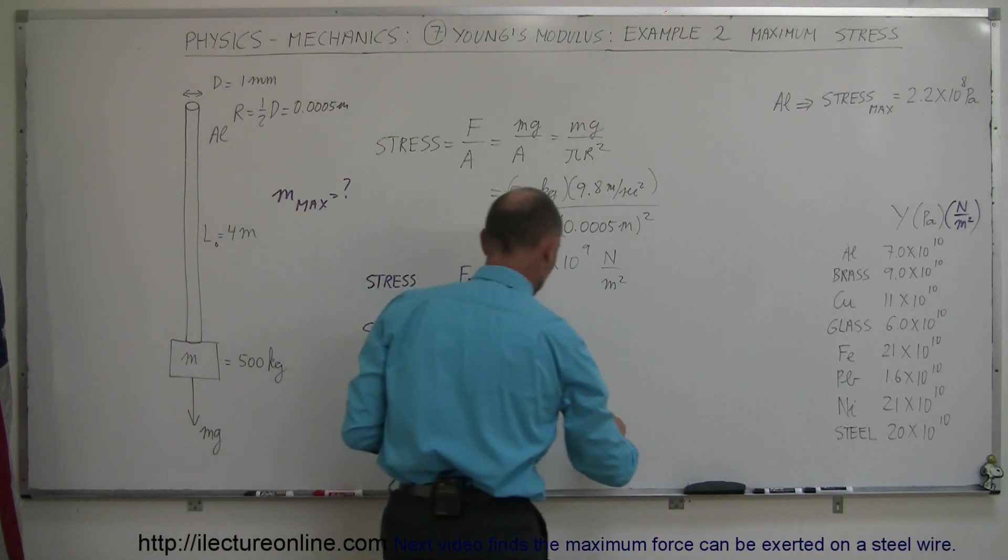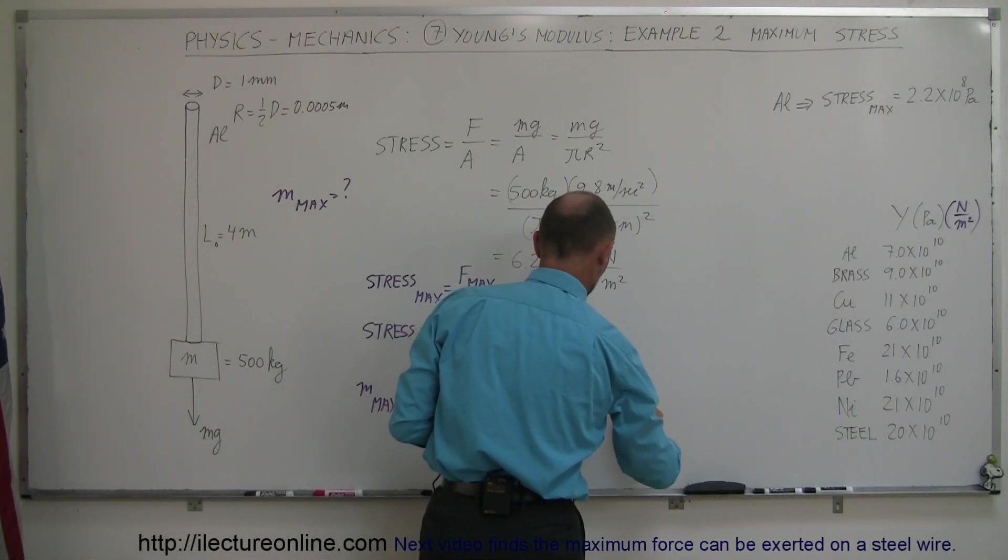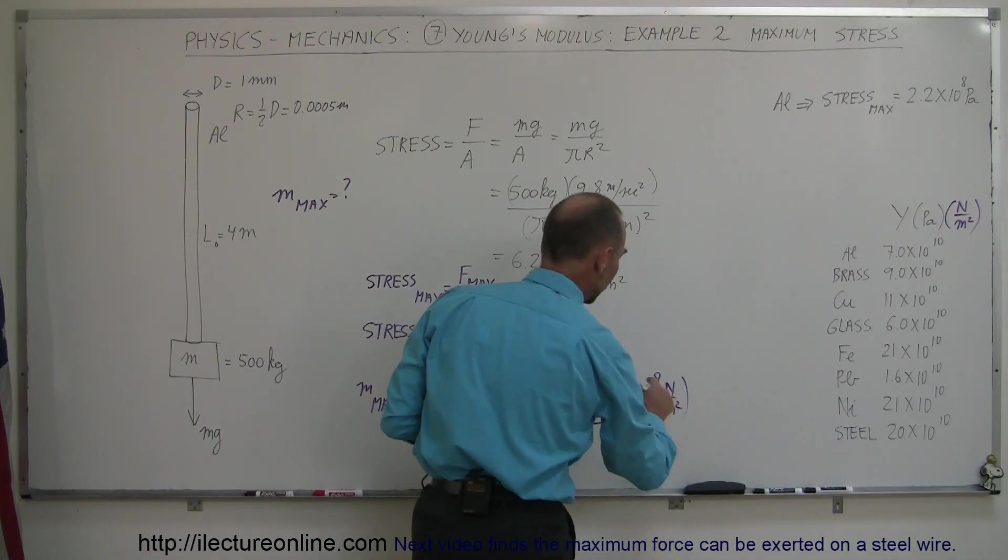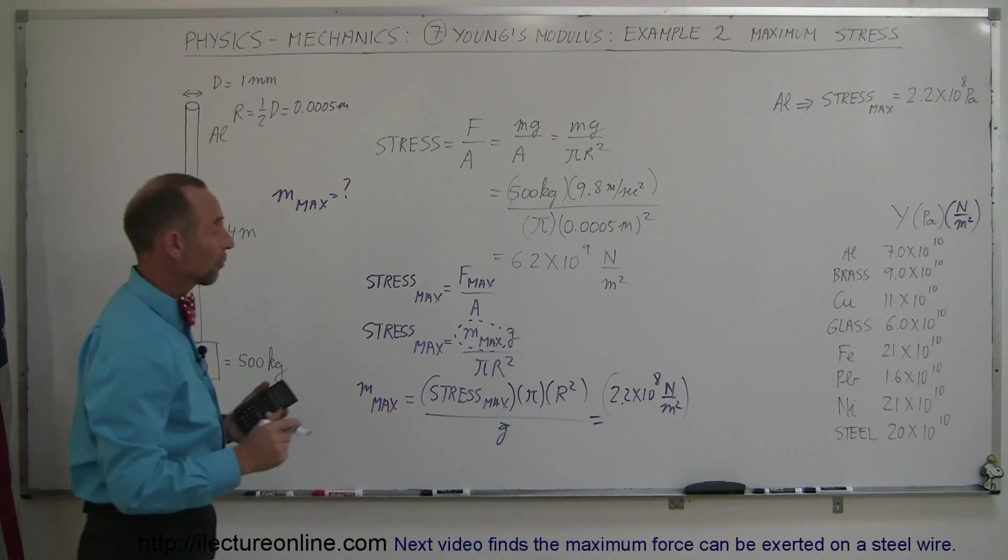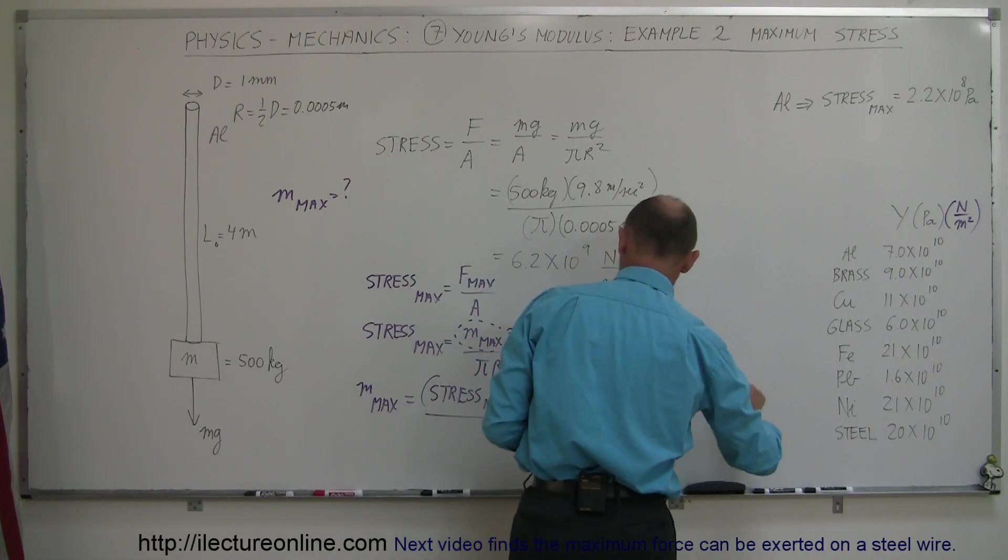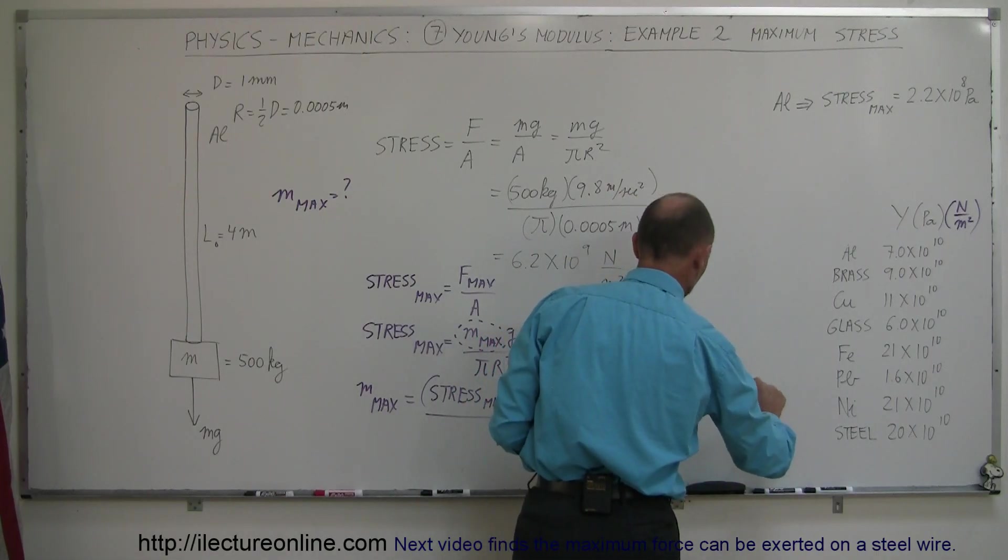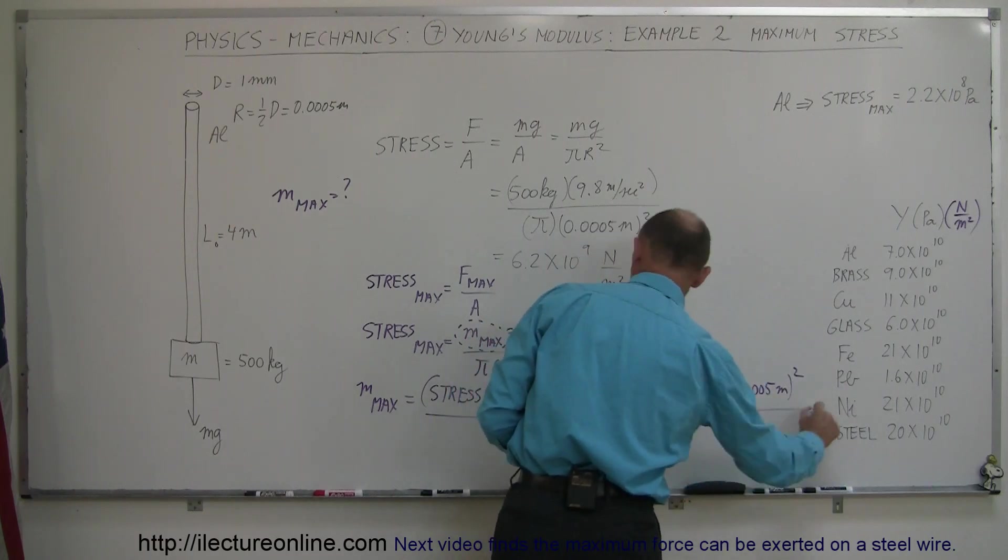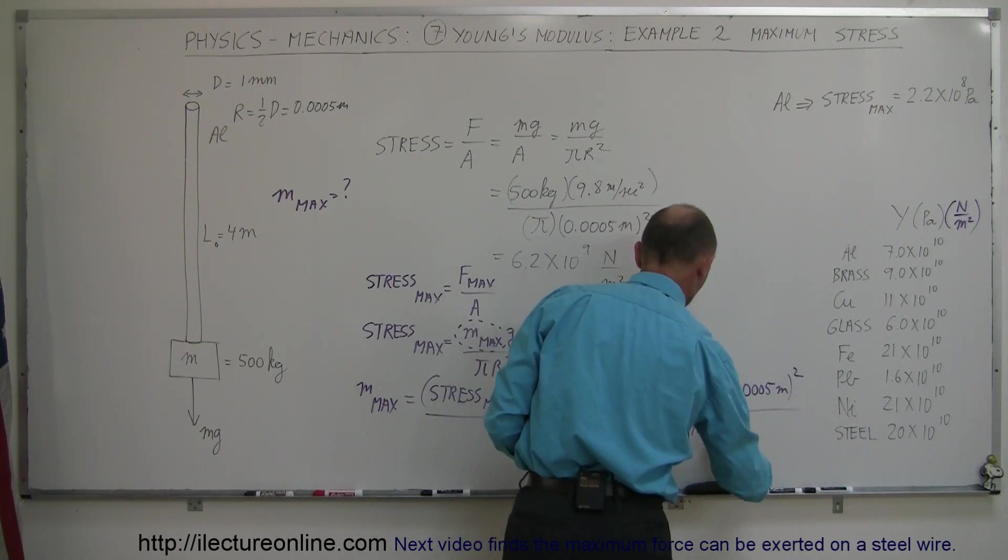Alright, we have the maximum stress, which is 2.2 times 10 to the 8 pascals, which is newtons per square meter. That's a large amount of force per square meter you can apply to aluminum before it breaks. Multiply times pi, multiply times the radius, 0.0005 meters squared, and then divide the whole thing by g, which is 9.8 meters per second squared.